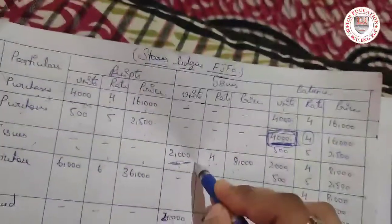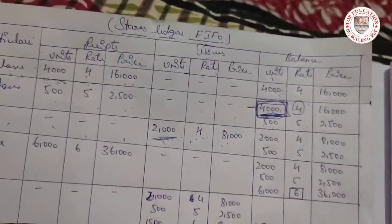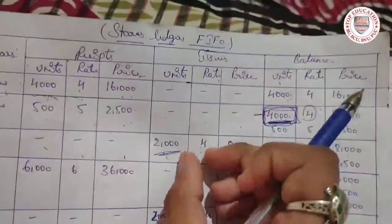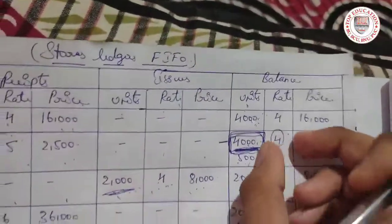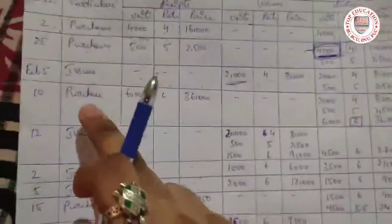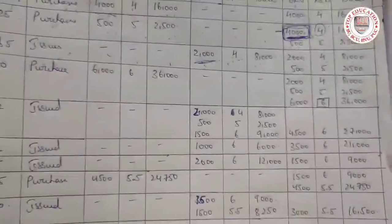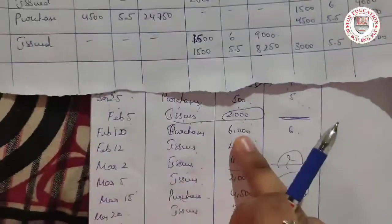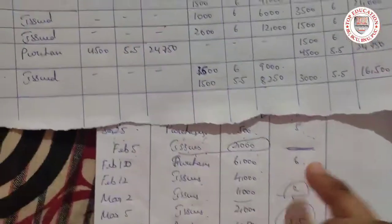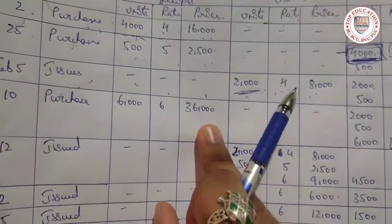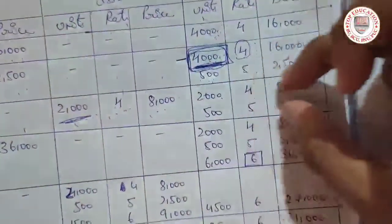Next, Feb 10 purchase: 6000 units at rate 6, so 6000 into 6 equals 36,000. The same entry is repeated in the balance column, carrying forward all existing balances and adding the new purchase.